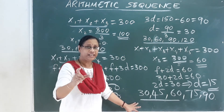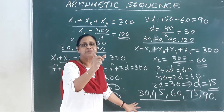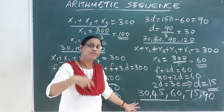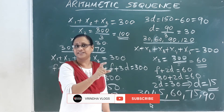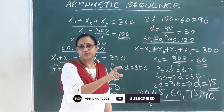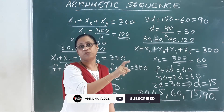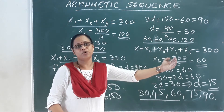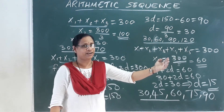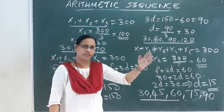For six terms: x1 plus x2 plus x3 plus x4 plus x5 plus x6 equals 300.